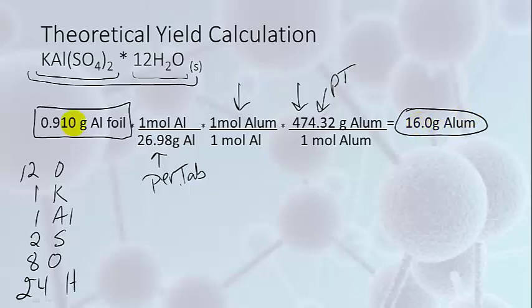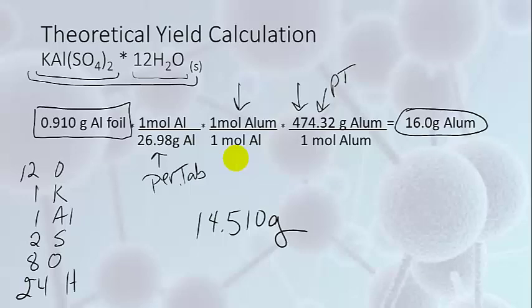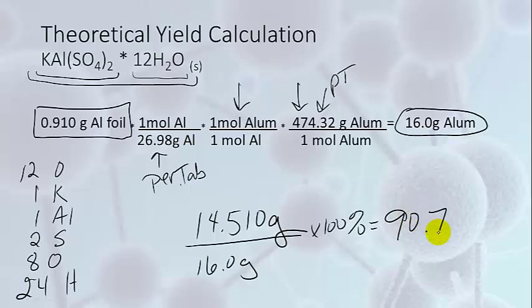But let's just say our actual yield was 14.510 grams. So this is our actual yield. Recall that our percent yield is actual divided by theoretical times 100. So our actual yield divided by our theoretical times 100 is our percent yield, 90.7%.